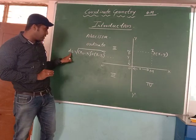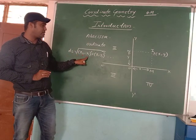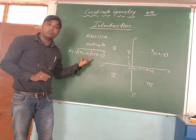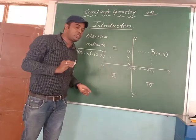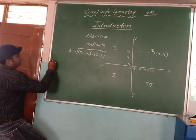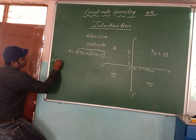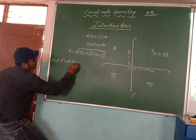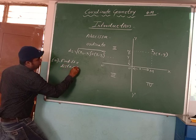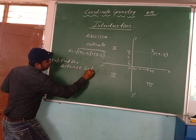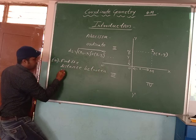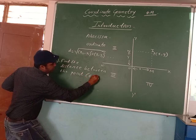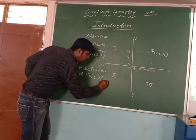The distance formula is: D is equal to square root of (X2 minus X1) whole square plus (Y2 minus Y1) whole square. On this basis, we are going to solve a few problems. The first problem — Example number 1 — the question is: find the distance between the points (6, 5) and (2, 1).